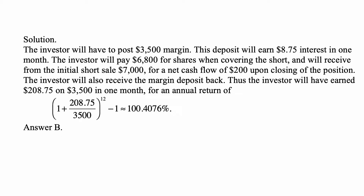Here's the solution. The investor will have to post a $3,500 margin. This deposit will earn 3% compounded monthly — annual effective compounded monthly — and that will be $8.75 interest in one month.